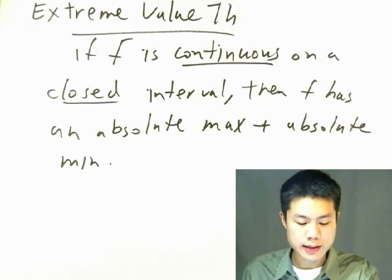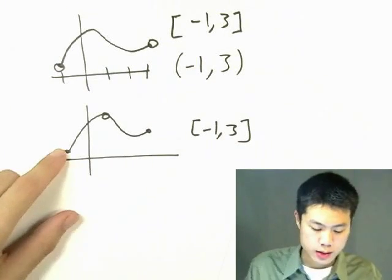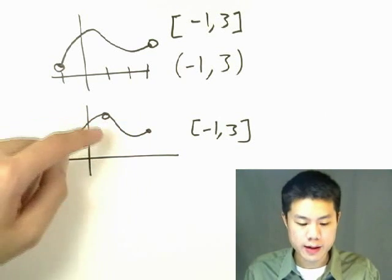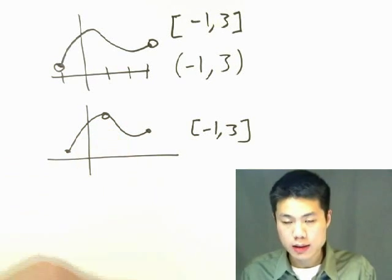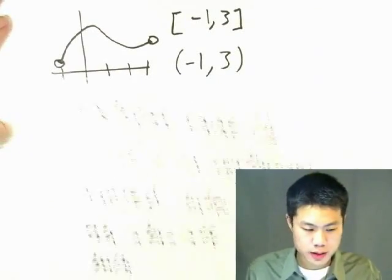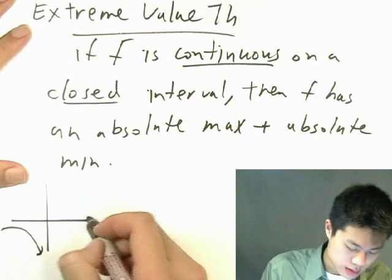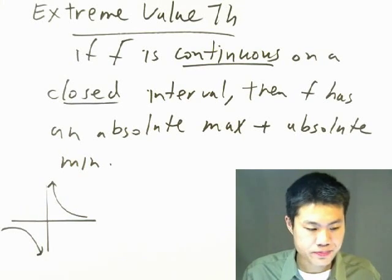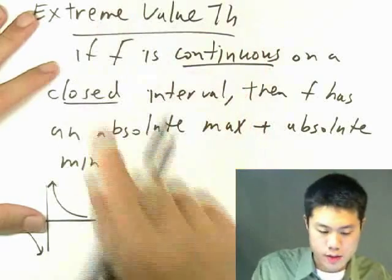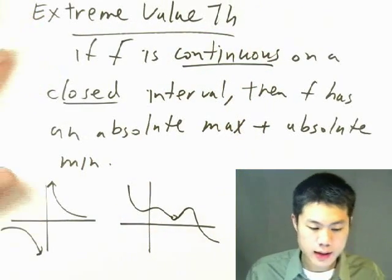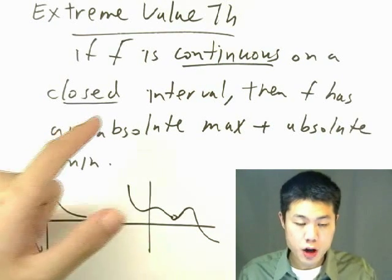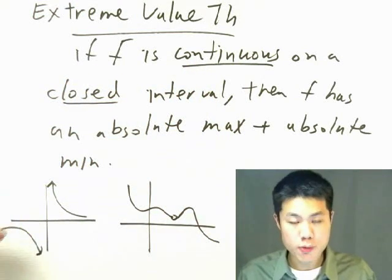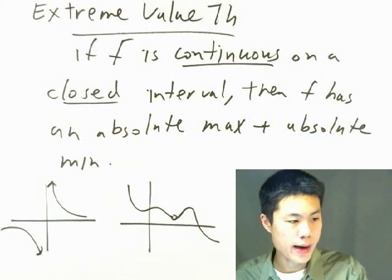Why does the function have to be continuous? We saw that even on a closed interval, if the function is not continuous — say the absolute maximum would have been at that point but the function is not defined there — then we don't have an absolute maximum. Also, if there is an asymptote, we don't have an absolute maximum because you can always go higher. Note, however, that a non-continuous function can still have an absolute extremum, but the theorem does not guarantee it. If the function is continuous and we're working on a closed interval, then it must have an absolute maximum and minimum.